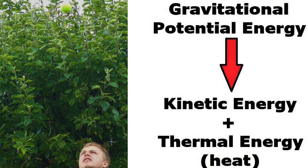All the aforementioned examples of energy transfer correspond with the law, or principle, of conservation of energy, which states that energy is neither created nor destroyed, but instead there is a conversion from one type of energy to another, or a transference of energy from one object to another. In this example, gravitational potential energy is being converted mainly into kinetic energy as the ball falls back down towards the ground.